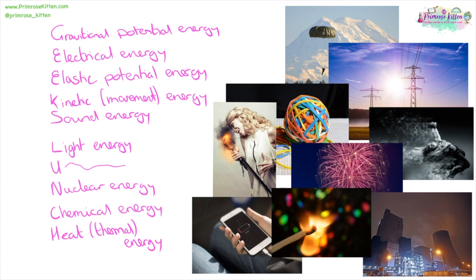You'll notice most of these involve more than one type of energy. For example, in a phone we have electrical energy going in, chemical energy being stored, and then heat energy because your phone gets hot, plus light and sound energy coming out. With a match, we have chemical energy stored, then kinetic energy used to strike the match, and then heat, light, and a bit of sound energy coming out.